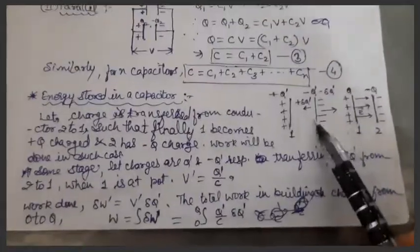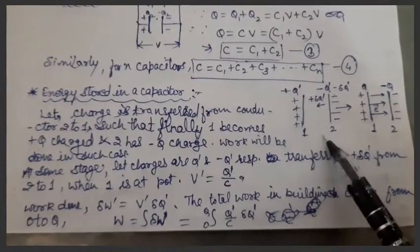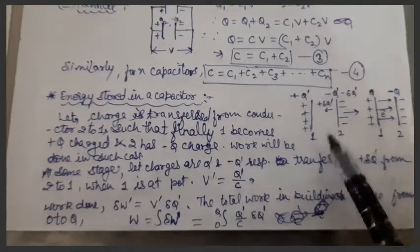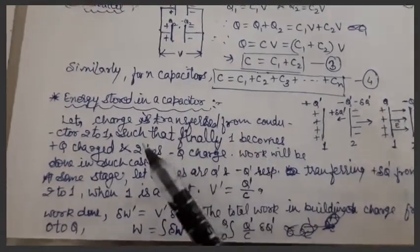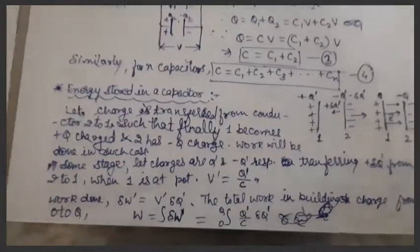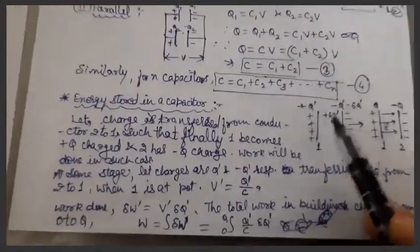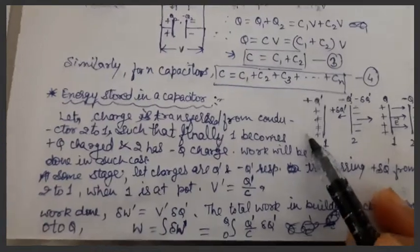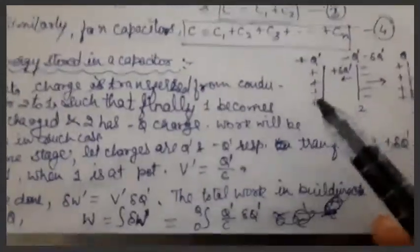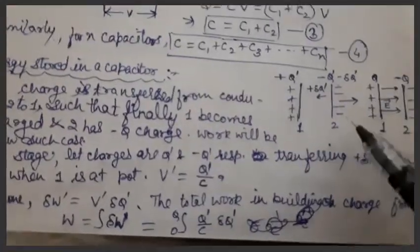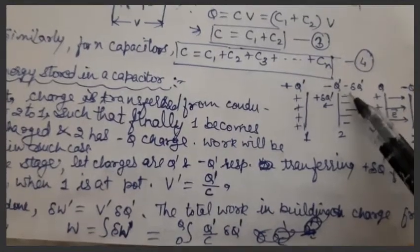Now let's consider a condition where we have two conductors, one and two, and we are taking up a process in which charge is continuously being transferred from two to one. Positive charge is being transferred from two to one, which means negative charge on two is slightly increasing.